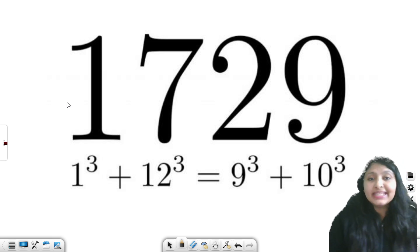Another way is 9 cube plus 10 cube, 729 plus 1000, that is again 1729.